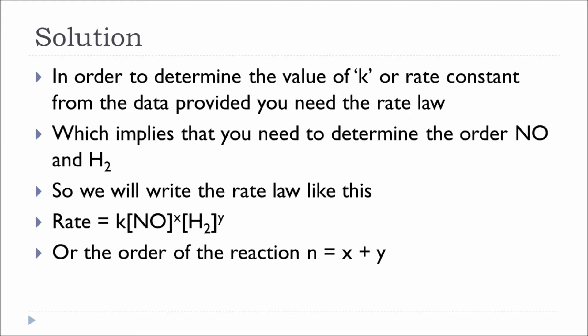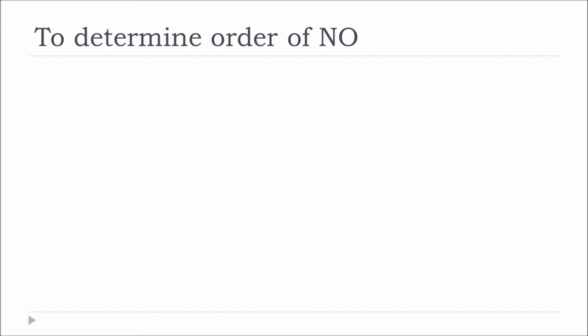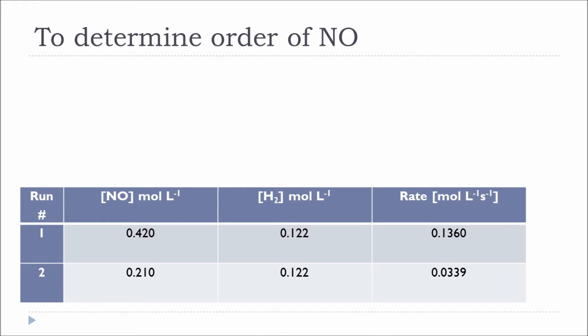We need to determine the value of k, and to do that we need the rate law, and to write the rate law we need the values of x and y. Anytime you get a problem based on the initial rate method and have to determine k, you must determine the order of each reactant and write the rate law. The first thing we are going to do is determine the order of nitric oxide by selecting experiments 1 and 2 from the data.